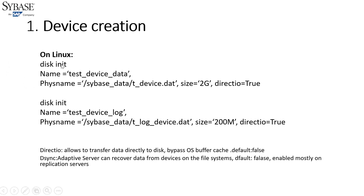To create a device we use the `disk init` command. We give it a logical name, a physical name which is the full path to the file where you want to store the device, and the size of the device — for example 2000 MB. Apart from these, there are additional parameters like `direct_io` and `desync`.